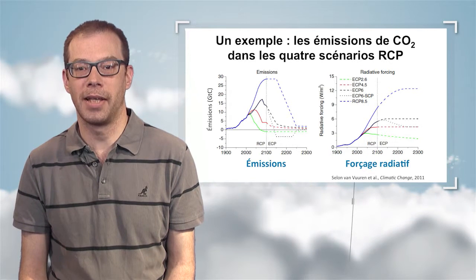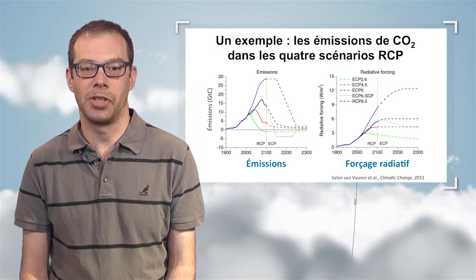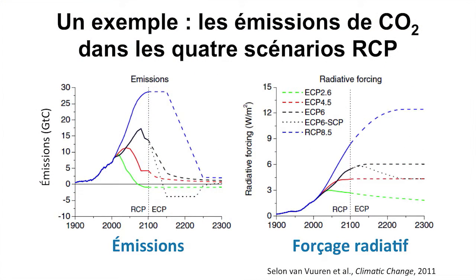Here we have the RCP scenarios — representative concentration pathways — used for the fifth IPCC report. Radiative forcing varies between extreme values providing the names of the RCP scenarios: 2.6, 4.5, and 8.5. For the RCP 2.6 scenario, CO2 emissions should reach a maximum ceiling value very quickly and decrease down to the year 2080, whereas for RCP 8.5, emissions will continue increasing until they reach 27 CO2 gigatons in 2100 — three times more than current emissions. These scenarios were then prolonged beyond the 21st century in a stylized manner, shown as dotted lines on the graphics.